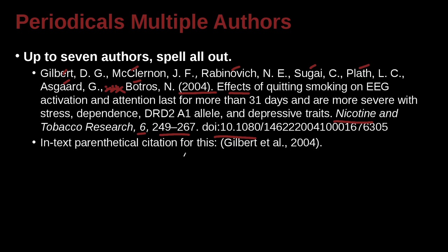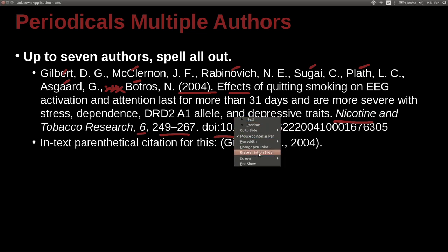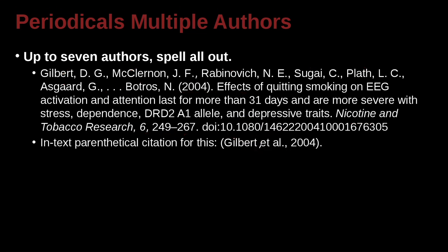In-text parenthetical citation for this — so if you were looking inside your paper, inside the sentence that you wrote, this is what it would look like: Gilbert et al. Why is it et al.? Because remember in the APA guideline, if you have seven or more, you can go ahead and use et al. That's different than the MLA, so keep that in mind.